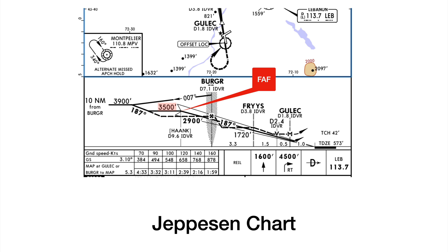If you're looking at a Jeppesen chart, 3,500 is the minimum altitude, and it shows you by that solid line that that's the intercept for the glide slope. That's your Final Approach Fix right there. A little bit simpler depiction, but 3,500 feet is your Final Approach Fix on this ILS, and this is how it's depicted on the Jeppesen chart.